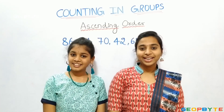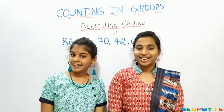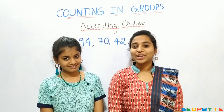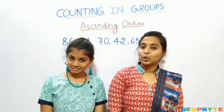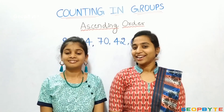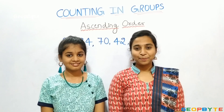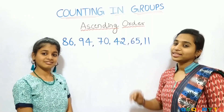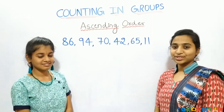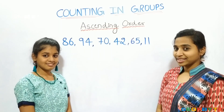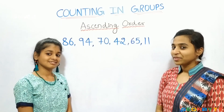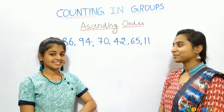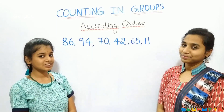Now, let us get into the topic: ascending order. Hey kids, ascending order means arranging the lowest number to the highest number. Now, let us see with an example. See kids, I have an arrangement of these numbers. Let us arrange them in ascending order. First, say which is the smallest number. Yes, correct answer — 11 is the smallest number.